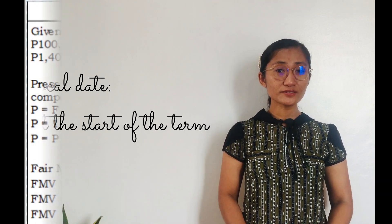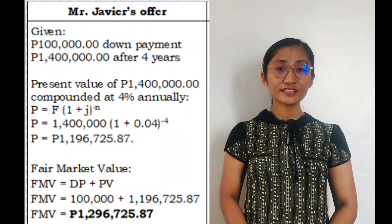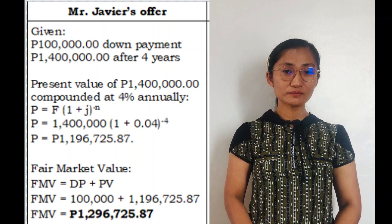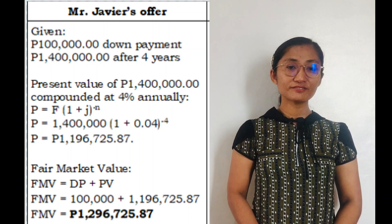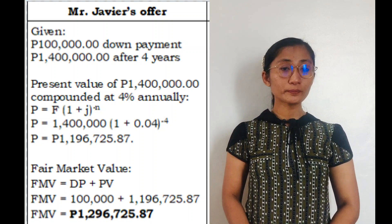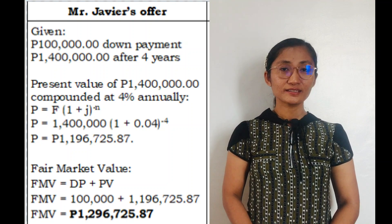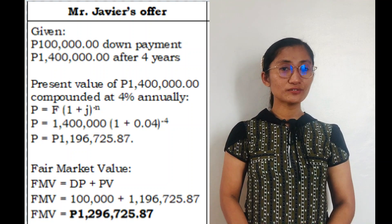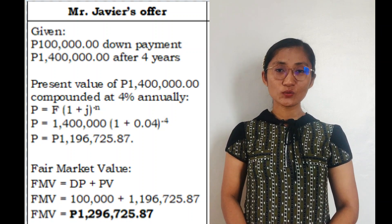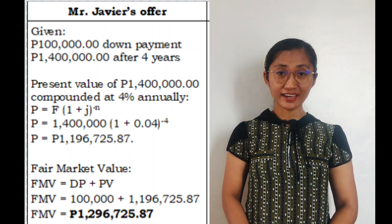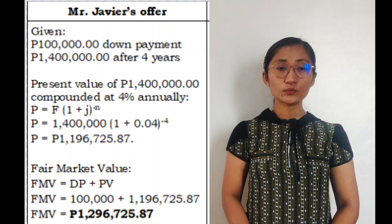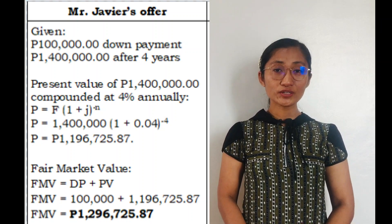For Mr. Javier's offer, the given are ₱100,000 down payment and ₱1,400,000 after 4 years. The present value of ₱1,400,000 compounded at 4% annually is determined using the formula for present value: P equals F times the quantity (1 plus J) raised to the negative N. By substitution, our F here is ₱1,400,000 and we are to get its corresponding present value.